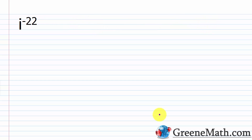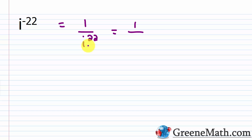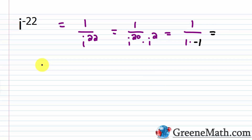What about i raised to the power of negative 22? Don't be scared by a negative exponent. When you have a negative exponent, you take the reciprocal of the base and make the exponent positive. So this becomes 1 over i to the 22nd power. Is 22 divisible by 4? No. Is 20? Yes. So I write this as 1 over (i to the power of 20 times i squared). We know i to the 20th power is 1, and i squared is negative 1, giving 1 over (1 times negative 1), which is 1 over negative 1, which is negative 1.